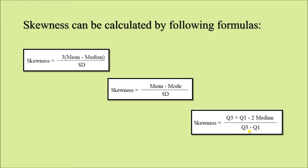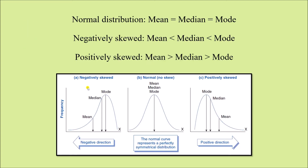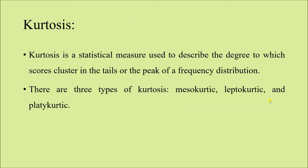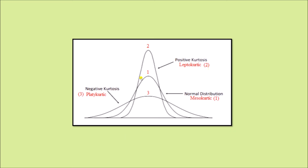That is all about skewness — you now know what left-skewed and right-skewed distributions are and the positions of mean, median, and mode, which is more than enough for this topic. Now coming to kurtosis. Kurtosis is a statistical measure used to describe the degree to which scores cluster in the tails or the peak of a frequency distribution. There are three types of kurtosis: mesokurtic, leptokurtic, and platykurtic.